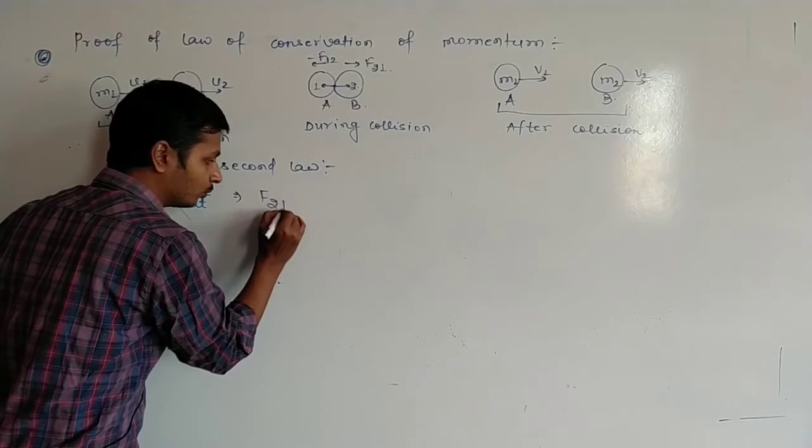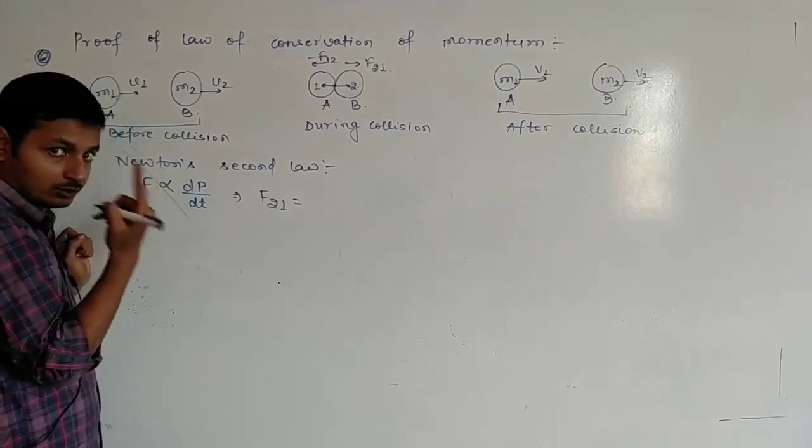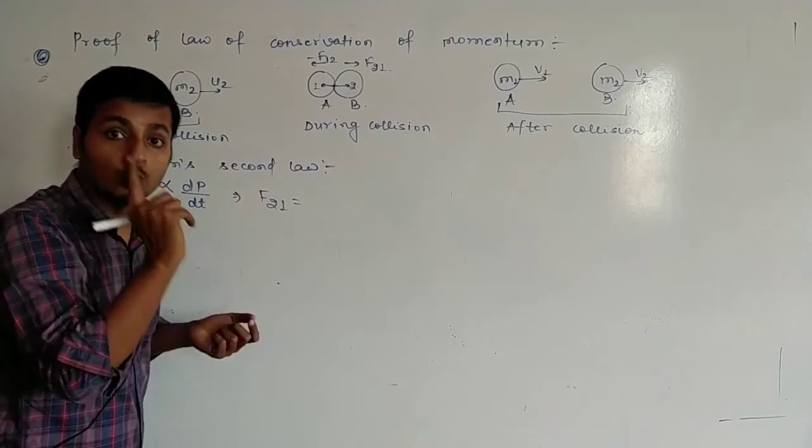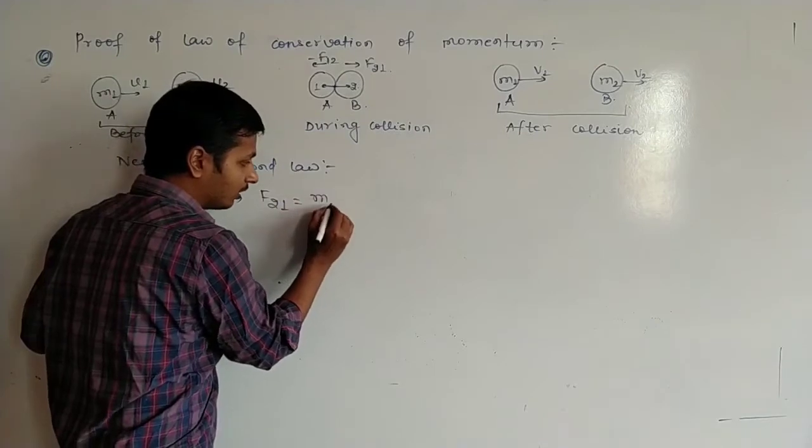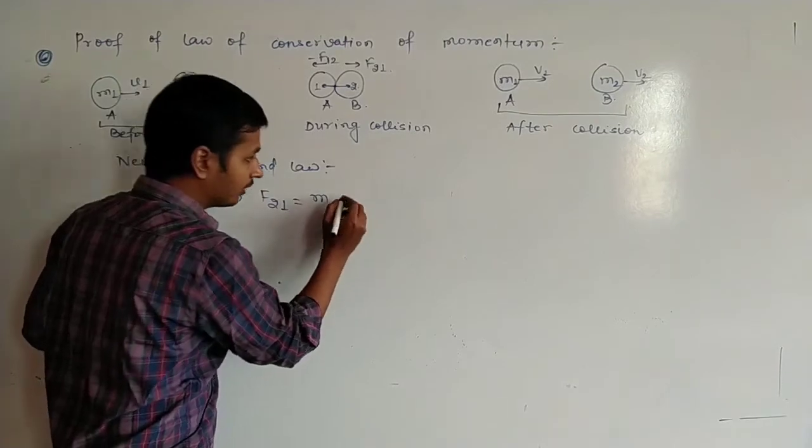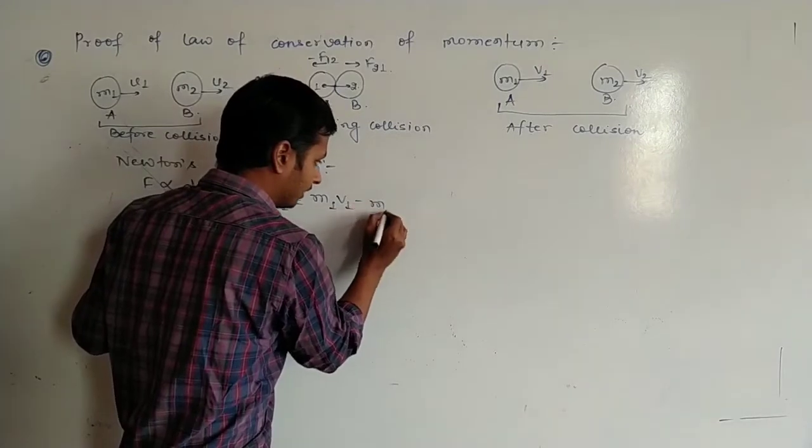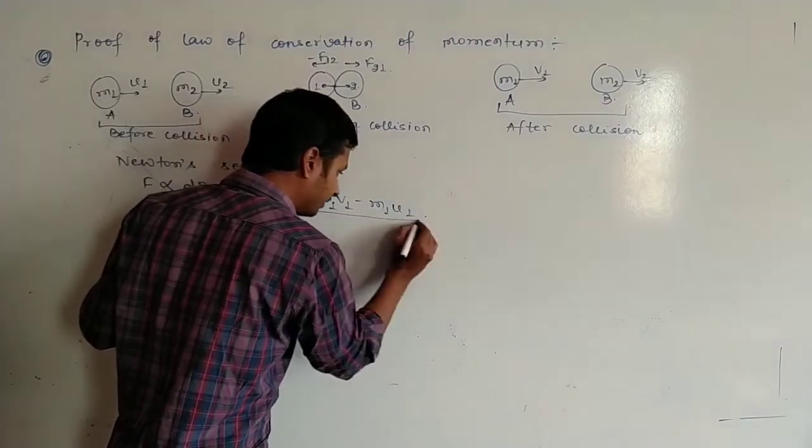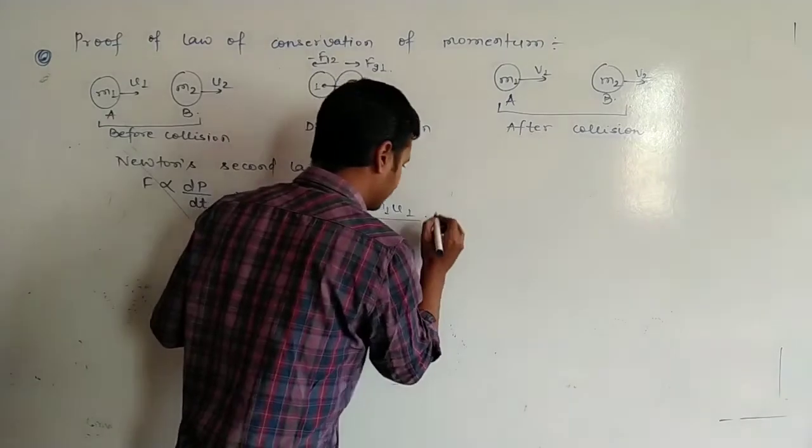f of 2 due to 1, force from 2 to 1. So this is equal to m1v1, this is the final velocity, and m1u1 divided by t.